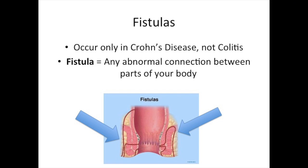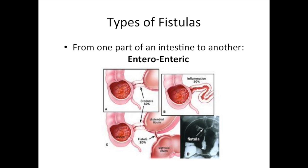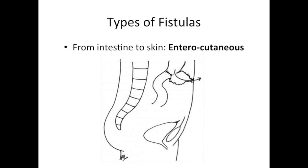not in ulcerative colitis. In the most simple terms, a fistula is any abnormal connection between parts of your body. There are many different types of fistulas. Fistulas can form between one part of the intestine to another part. They can form between intestines and your skin. These are called enterocutaneous fistulas.